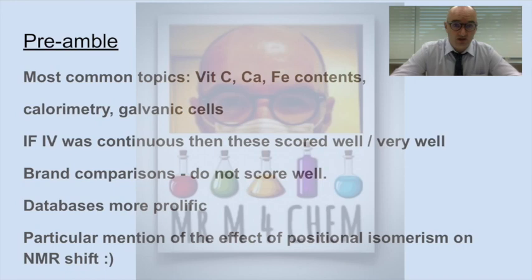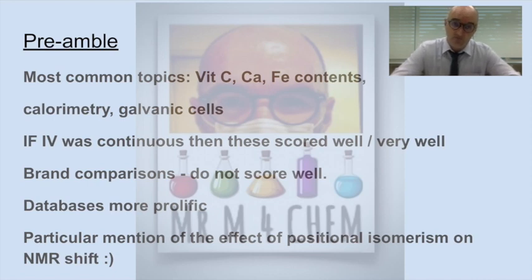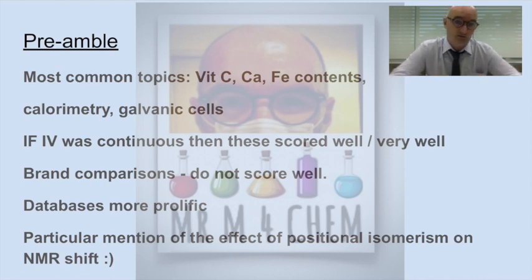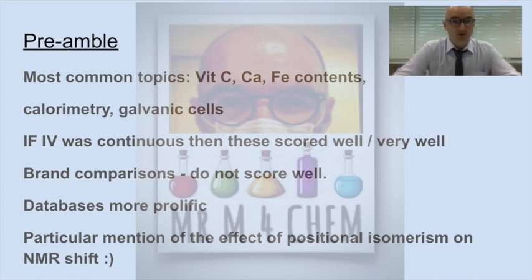Calorimetry was still very popular, so I'm assuming that's to do with the effect of carbon chain length on energy content, maybe even extending that to some biodiesel investigations and looking at how energy efficient they can be. And of course, galvanic cells are great. You can vary the concentration, you can use the Nernst equation, and you can get some great results, maybe even 24 on your internal assessment.